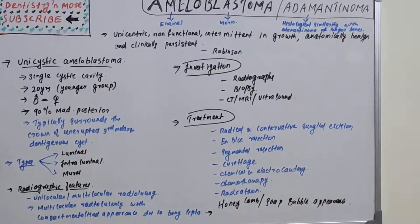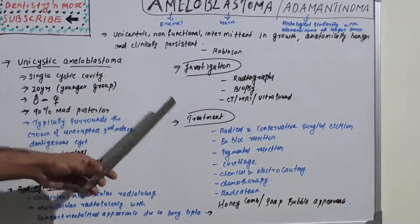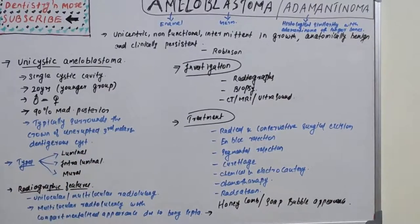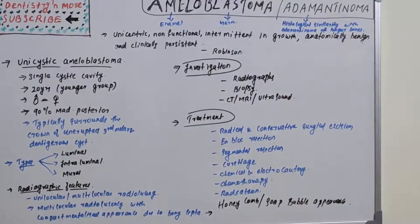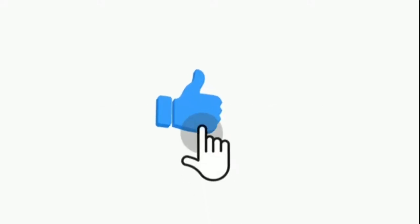Ameloblastoma was a very lengthy session covering clinical and histological classification, pathogenesis, clinical features, radiographic features, histological types, unicystic details, various treatment options, and investigation. Ameloblastoma is an odontogenic tumor and one of the most common odontogenic tumors. Together with CEOT (Pindborg tumor) and AOT (Adenomatoid Odontogenic Tumor), ameloblastoma represents very commonly asked essay questions. Thank you.